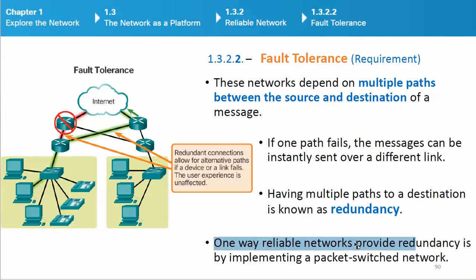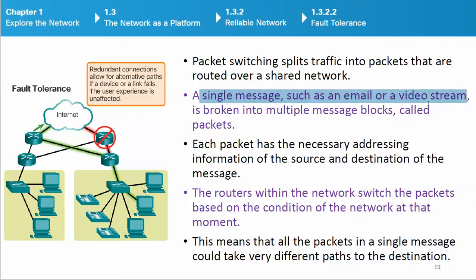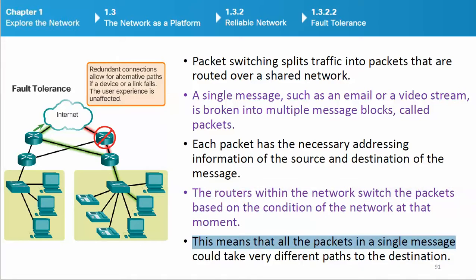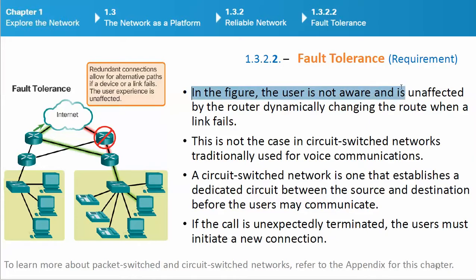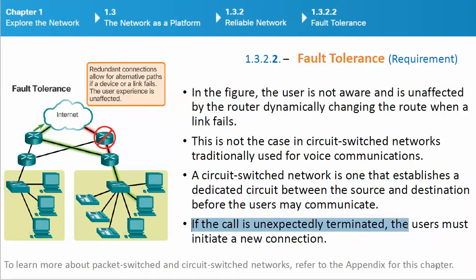One way reliable networks provide redundancy is by implementing a packet switched network. Packet switching splits traffic into packets that are routed over a shared network. A single message, such as an email or a video stream, is broken into multiple message blocks called packets. Each packet has the necessary addressing information of the source and destination. The routers within the network switch the packets based on the condition of the network at that moment, meaning all packets in a single message could take very different paths to the destination. In circuit switched networks, traditionally used for voice communications, a dedicated circuit is established between the source and destination before users may communicate — if the call is unexpectedly terminated, the users must initiate a new connection.